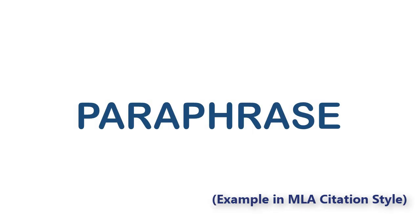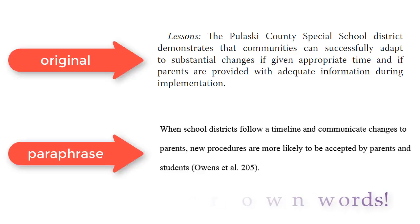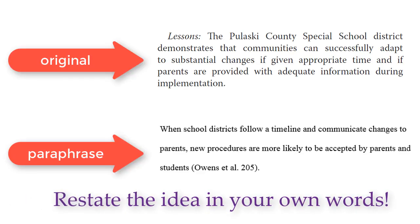Another option for using the article's information in your paper is called paraphrasing. A paraphrase is a restatement of a sentence or phrase you find in a source. When you paraphrase, you express an author's ideas in your own words, using approximately the same number of words and details as in the source. But be careful — this doesn't mean finding synonyms of the author's words and just changing them out. That's plagiarism. Also, remember that a paraphrase should be cited in the text and on your works cited or reference page.